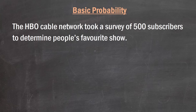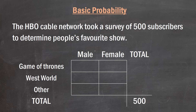The HBO cable network took a survey of 500 subscribers to determine people's favorite show. In this case there were two categorical variables: gender (male/female) and people's favorite show. The shows included are Game of Thrones, Westworld, and an 'other' category combining everything else — probably the two biggest shows on the HBO roster. Let's see how this distribution pans out.